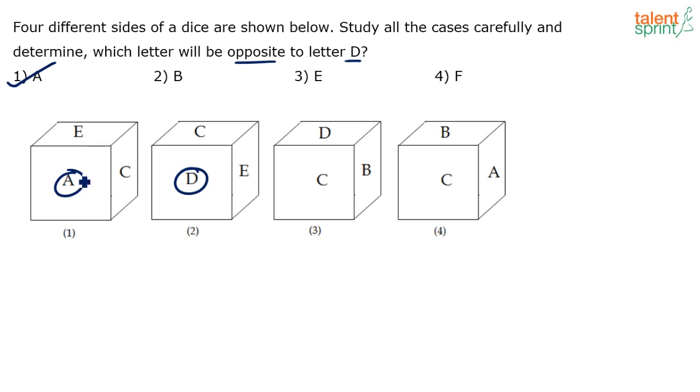Why is it so? Remember one technique that we discussed in dice: if you observe figure one and figure two, we have E and C here, and here also we have E and C in the same or opposite direction. When we find that two of the faces are common in two dice, the third faces have to be opposite. There is no other way out.